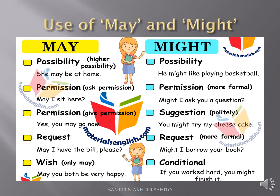Now look at the modal verb 'might.' It is used for possibility — 'He might like playing basketball.' You can understand that 'may' is used in present form and 'might' can be used in past form. Might is the past of may. For permission in a more formal way: 'Might I ask you a question?'